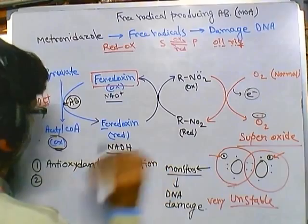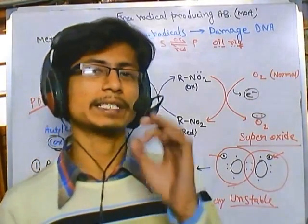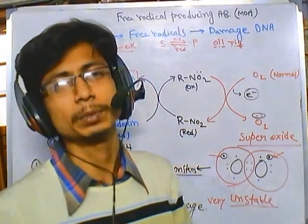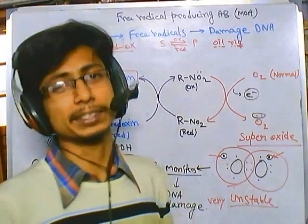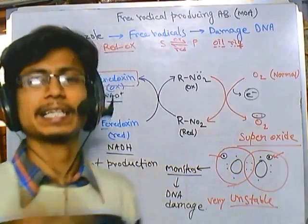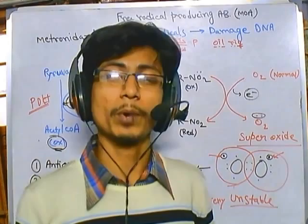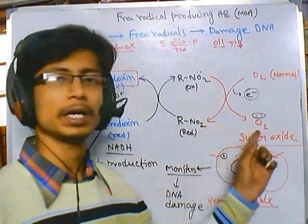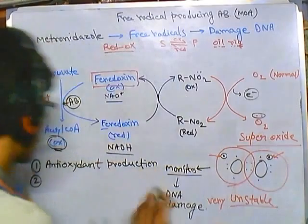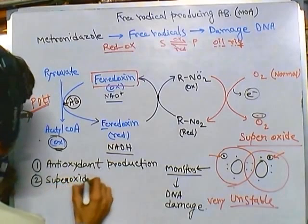The second important mechanism involves enzymatic reactions. Some bacteria naturally inherit enzymes called superoxide dismutase. Superoxide dismutase reacts with superoxide and converts it into a less damaging form — a less harmful radical. So this enzyme helps convert the dangerous compound into less harmful compounds.